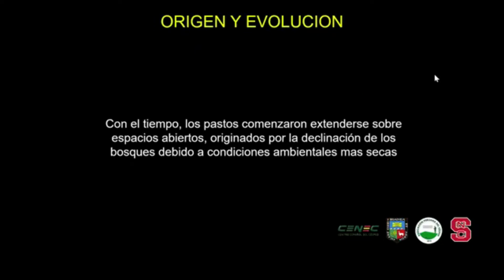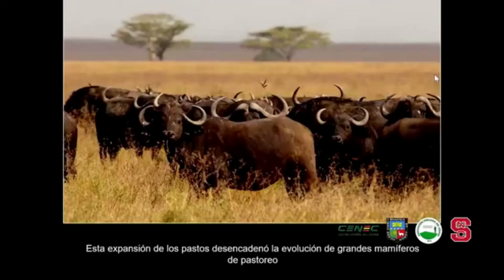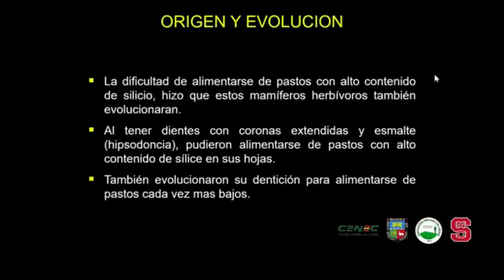Con el tiempo, los pastos comenzaron a extenderse en grandes cantidades sobre los espacios abiertos, debido a la declinación de los bosques por condiciones ambientales más secas. Esto permitió el desarrollo de grandes mamíferos de pastoreo al haber una gran abundancia de comida. Sin embargo, los pastos se defendían de esta depredación a través de la formación de silicio en sus hojas. Pero eso también permitió que los mamíferos herbívoros evolucionaran, creando dientes de coronas extendidas y con esmalte —el llamado hipsodontal— que les permitió alimentarse de pastos con alto contenido de silicio. Adicionalmente, los pastos fueron reduciendo de tamaño para evitar ser comidos, pero la dentición de esos animales también evolucionó para alimentarse de pastos cada vez más bajos.